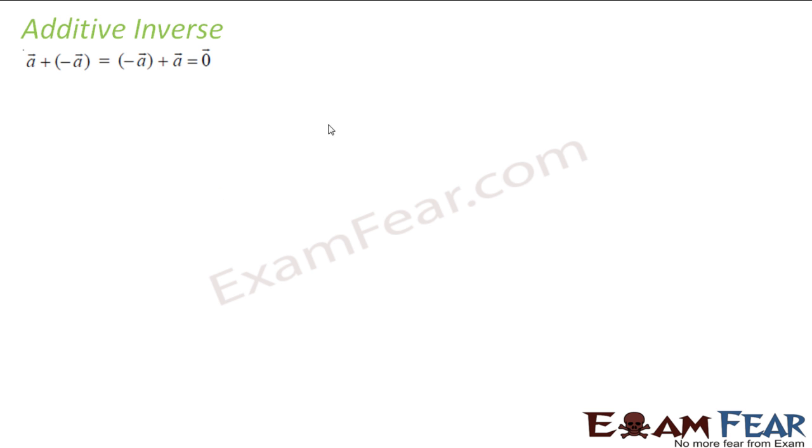Additive inverse. You add a vector a, the same vector of opposite direction, you get a zero vector. So if you have this vector, you do a head to tail matting. This guy overlaps like this. The final vector is a zero vector. Because final vector is a vector which starts from here, ends here itself.